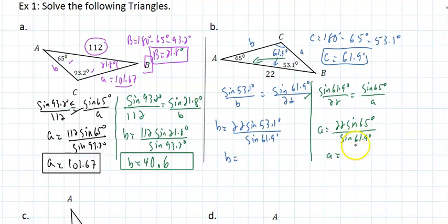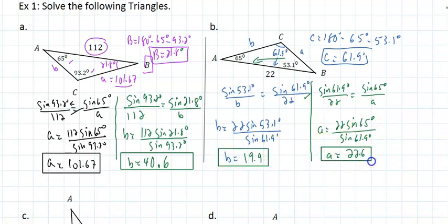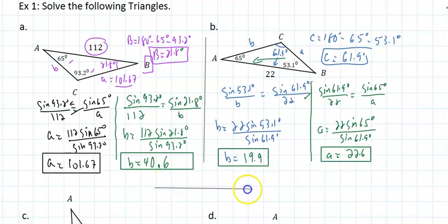When you're done, it should make sense: the biggest angle should be opposite the biggest side, and the smallest angle should be opposite the smallest side.